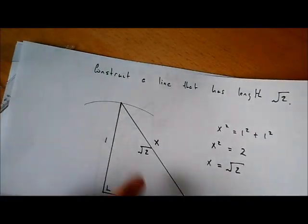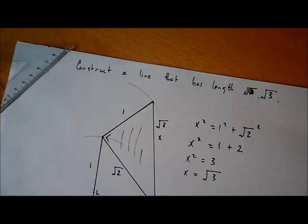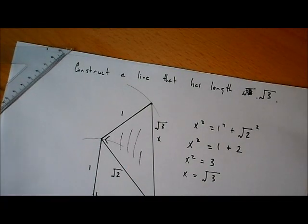So in the first part we drew a line that has length the square root of 2, and in the second part we drew a line that has length the square root of 3.